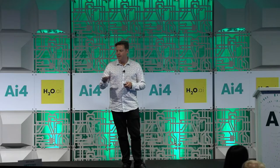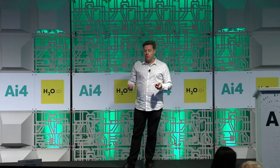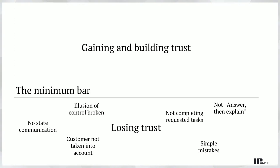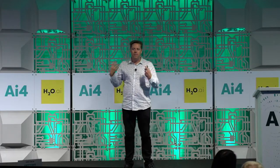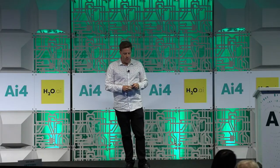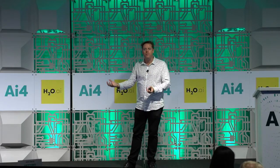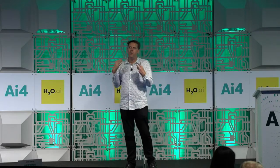There's a minimum bar: things that if you do them, people will not trust your service. These include no-state communication, not explaining why something happened, not completing requested tasks, or making really simple mistakes. Research shows that if a machine makes a complex mistake, people are more forgiving — they feel they could do the same thing. But if you're making simple errors of judgment that a human being thinks are stupid, they won't trust your system. Above that minimum, using natural language, not going overboard with branding or voice, including context, and handling high-risk tasks correctly — like a large bank transfer — it should feel like it carries the right gravitas of the situation.